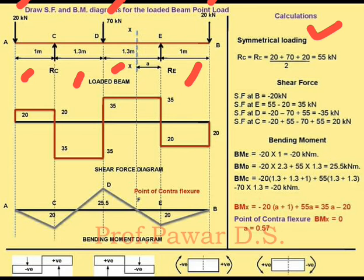Due to symmetry, we add all the loads on the beam and divide by 2 to equally distribute the total. So 20 plus 70 plus 20, divided by 2 — the reaction RC and RE will be 55kN.